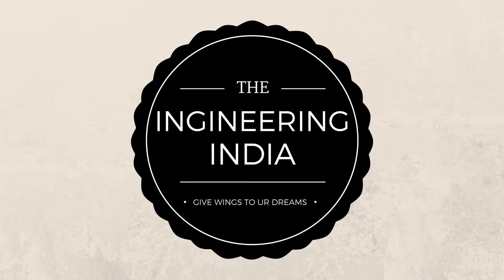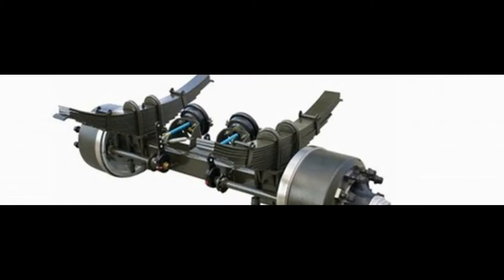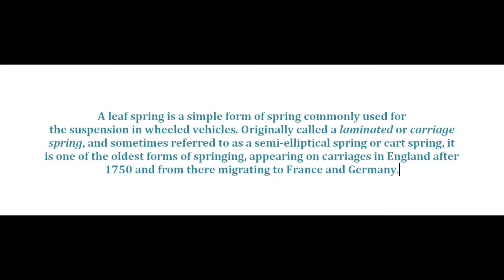Welcome back to Engineering India — give wings to your dreams. Today we are going to discuss about one of the dependent suspension systems, that is the leaf spring suspension system. This is the suspension system type which is used in heavy vehicles because it has got brilliant capacity to carry heavy loads when compared with coil spring suspension system. This spring system is originally called as land method or carriage spring, and sometimes it is referred to as semi-elliptical spring.